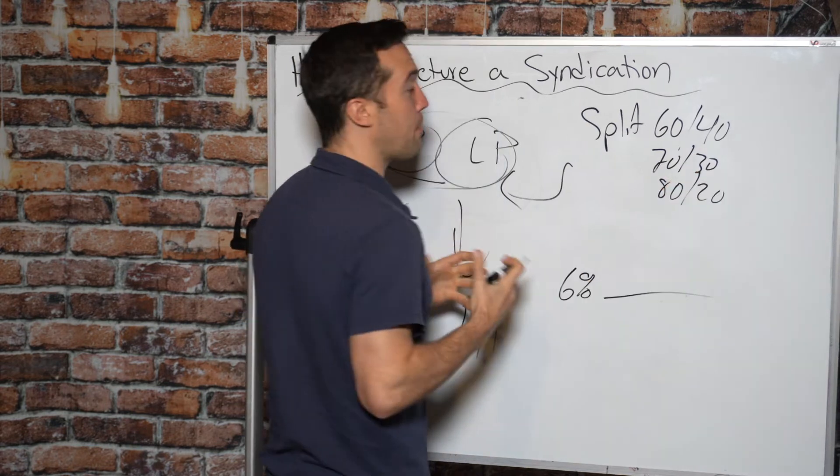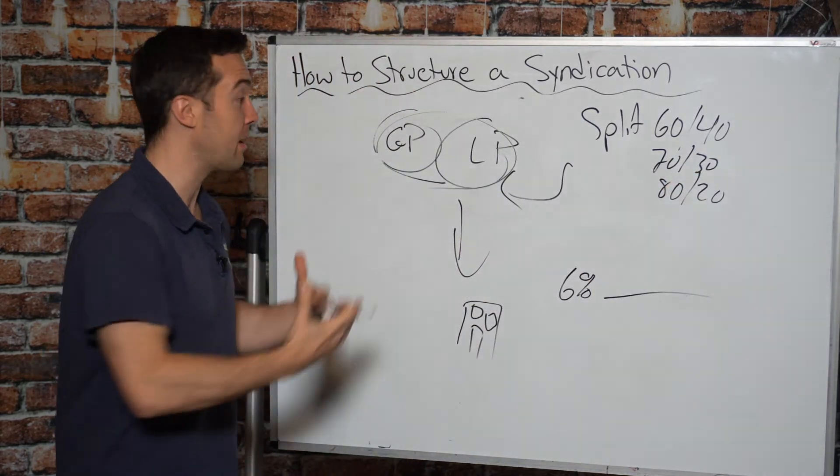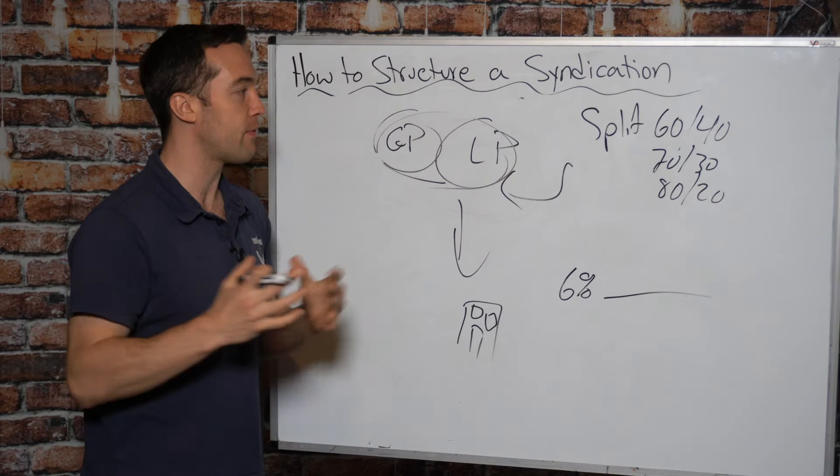The general partnership cannot participate in the profits and the profits are distributed usually through what's called a split. And a split, it could be, you know, 60-40 in favor of the limited partners. It could be 70-30. It could be 80-20 depending on the deal, depending on the situation,